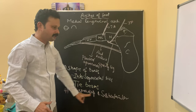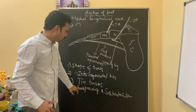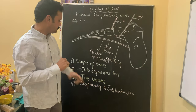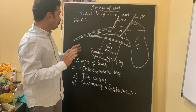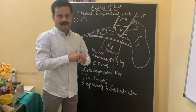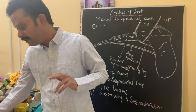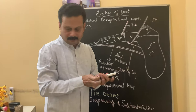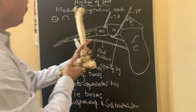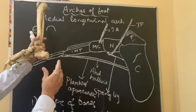To summarize: the maintenance of the medial longitudinal arch should be studied under four headings — shape of the bones, intersegmental ties, tie beams, and suspensory and sustentacular action. Now let us correlate with the skeleton on the right side: talus, calcaneum, navicular, medial cuneiform, intermediate cuneiform, lateral cuneiform, and metatarsal bones — first, second, and third.